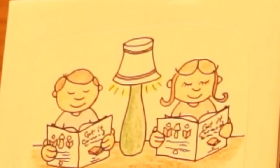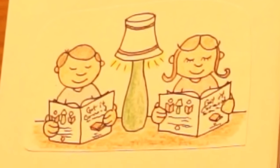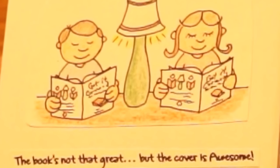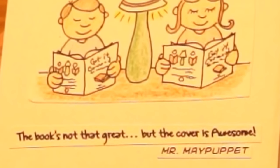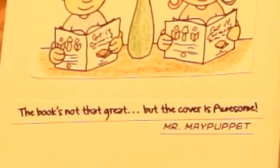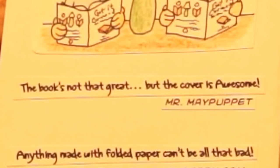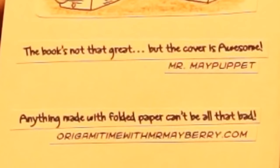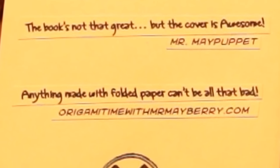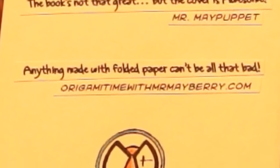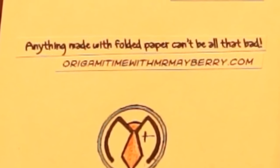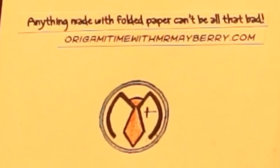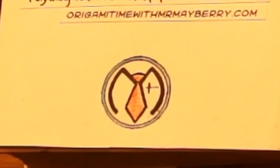On the back I've got a picture of a boy and a girl reading this book, and so there's the book. And also a couple book reviews here. The book's not that great, but the cover is awesome. And that was written by Mr. May Puppet. Then you have also Anything Made with Folded Paper Can't Be All That Bad. And that is a book review by Origami Time with MrMayberry.com. I have my logo here at the bottom.